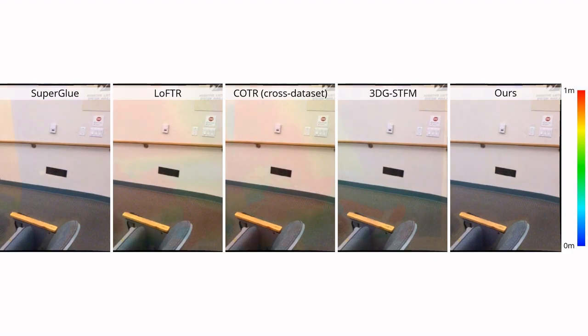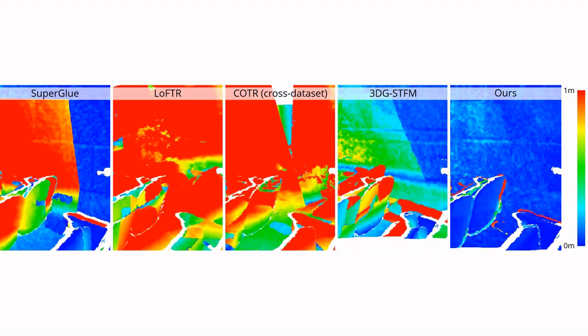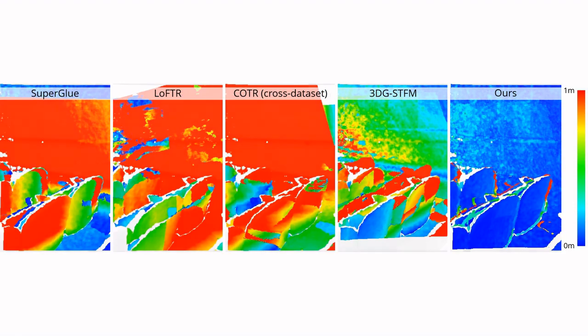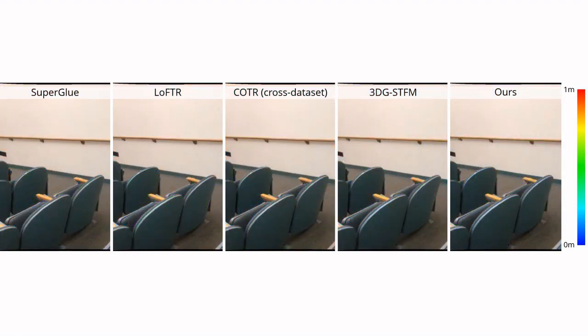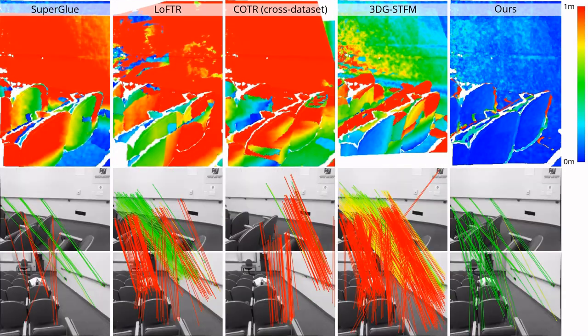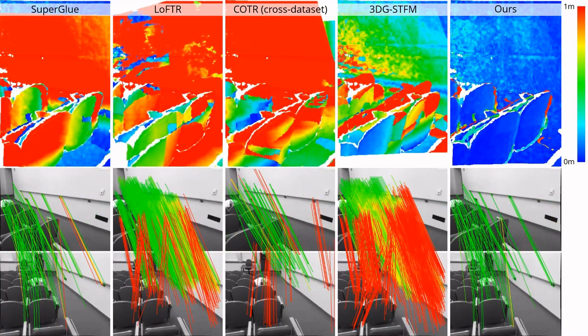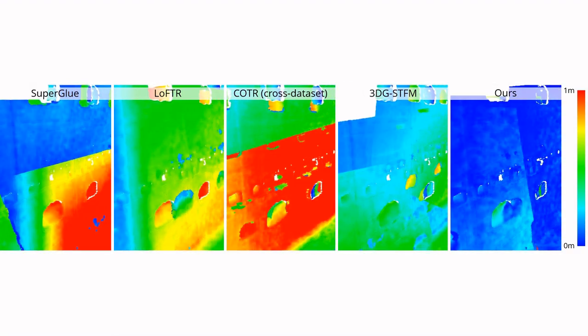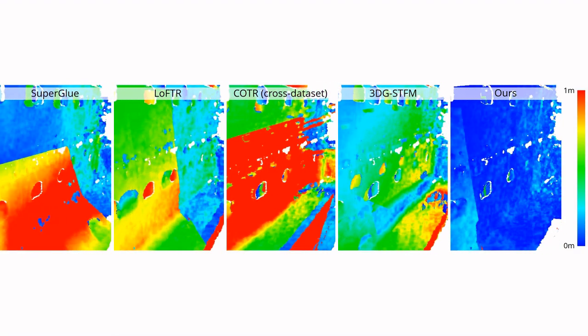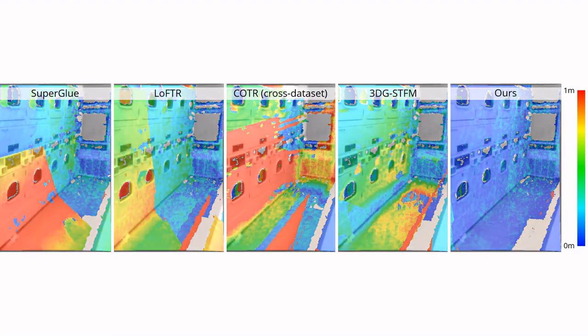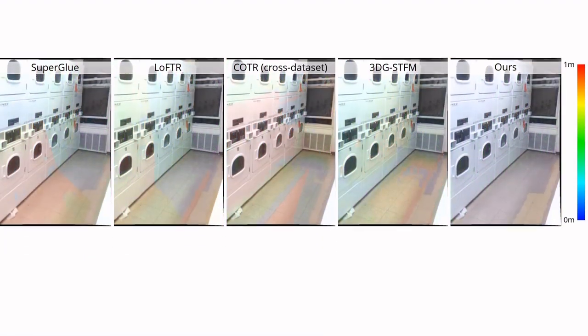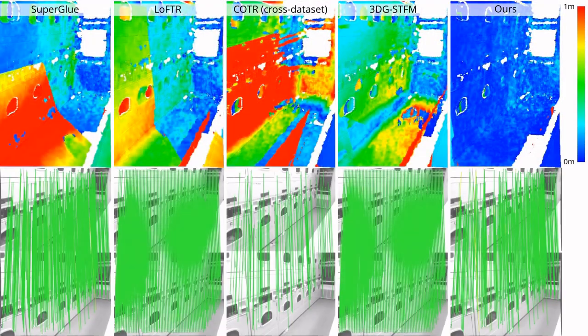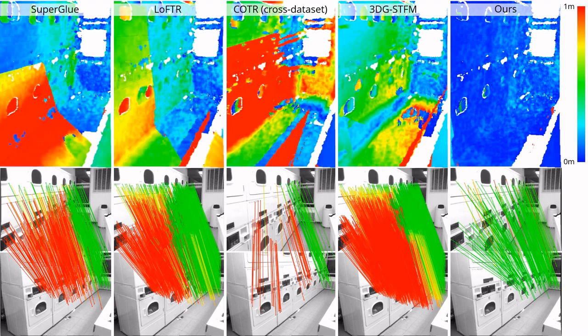We visualize the reprojection error by projecting the ground truth depth maps using the estimated poses. Our method produces fewer outliers and performs better in the presence of repetitive patterns.